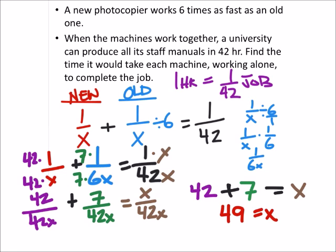So 42 plus 7 equals 49, meaning X equals 49. The new machine completes 1/49 of the job per hour, and it takes 49 hours to complete the full job. For the old machine, 49 times 6 gives us 294 hours — the same answers we got with the first method.